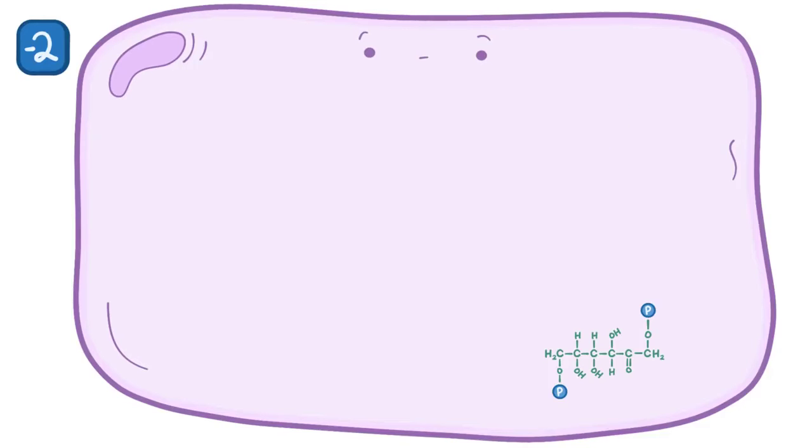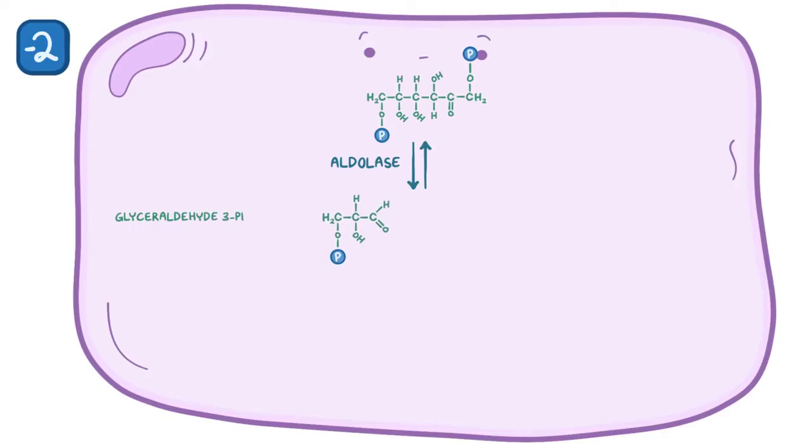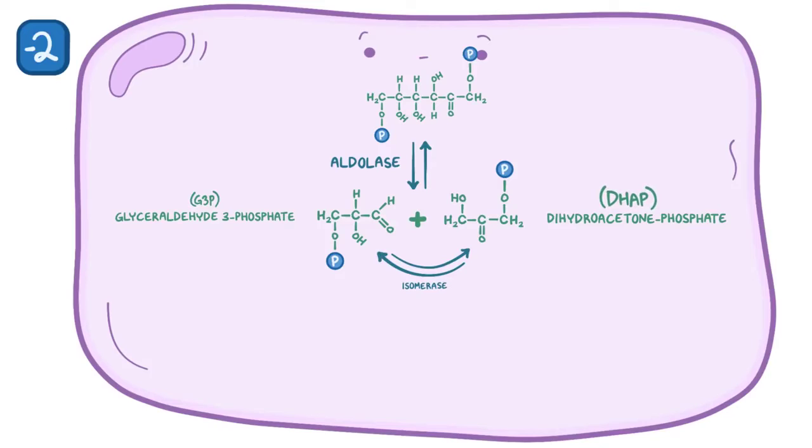Now, when cells do need energy, PFK1 becomes very active in generating fructose-1,6-bisphosphate. Fructose-1,6-bisphosphate is cleaved by the enzyme aldolase into two 3-carbon molecules: glyceraldehyde-3-phosphate and dihydroxyacetone phosphate. Only G3P can go down the glycolysis pathway, so an isomerase enzyme converts DHAP into G3P. As a result, for each glucose molecule, there are two G3P molecules.